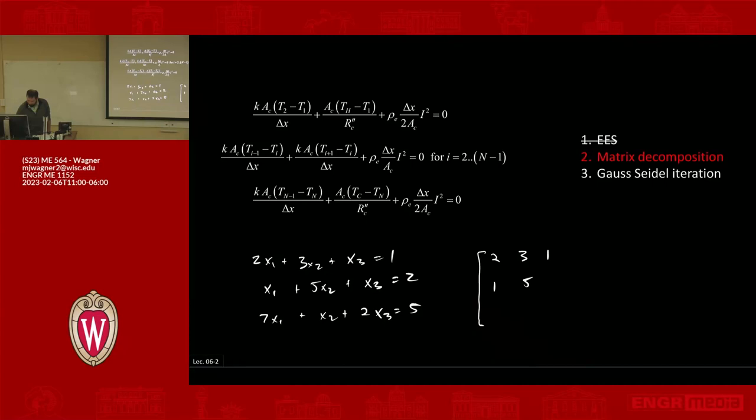Second would be 1, 5, 1. Third would be 7, 1, 2, right? So this is my coefficient matrix. This is commonly called A,